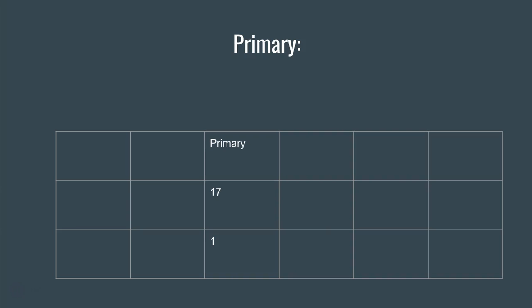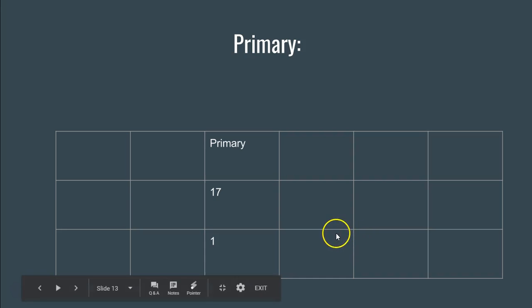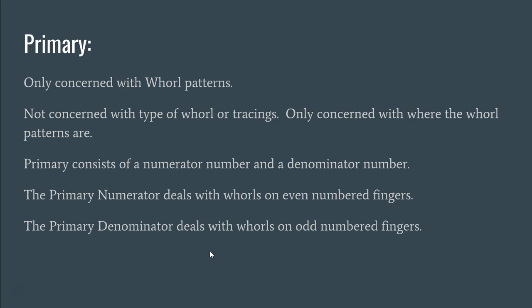Make sure you have this cheat sheet out to help with the primary. The primary goes in the third spot in the Henry classification and consists of a numerator on top and a denominator on the bottom. The primary is only concerned with whorl fingerprint patterns. Unlike other parts of Henry, when we do the primary we're not worried about the fingerprint tracing, nor the type of whorl — we don't care if it's a central pocket whorl or a double loop whorl, or whether it's inner or outer tracing. All we're interested in is where the whorls are located.